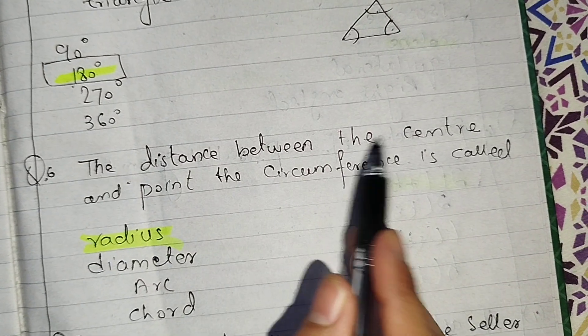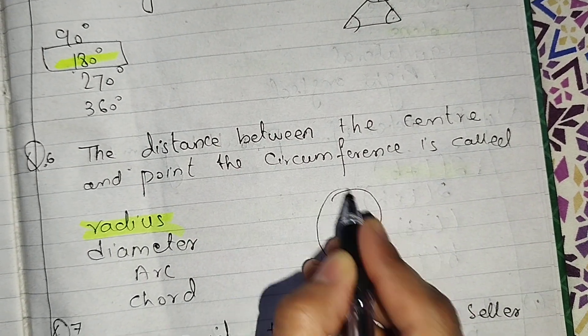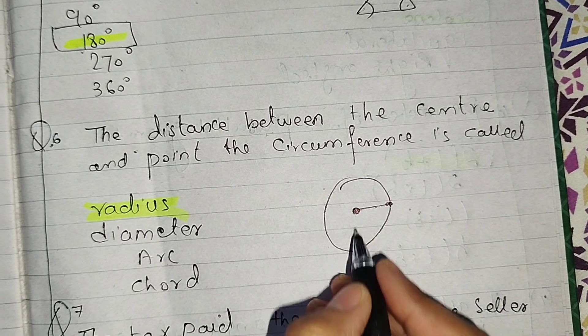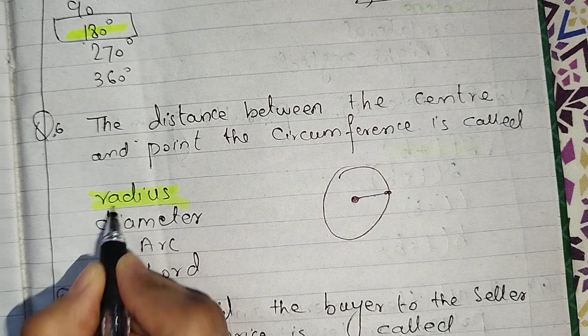Next, the distance between the center and the circumference of the circle is called the radius.